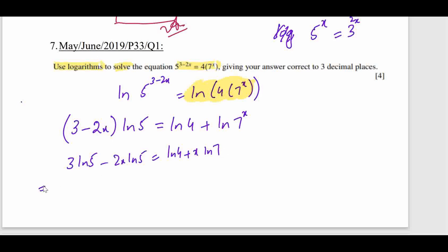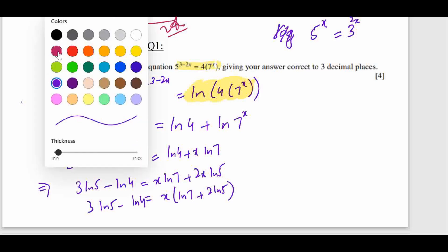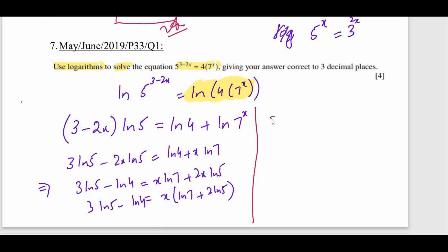We collect like terms: 3·ln 5 − ln 4 = x·ln 7 + 2x·ln 5. Taking x as common on the right: 3·ln 5 − ln 4 = x(ln 7 + 2·ln 5). Therefore x = (3·ln 5 − ln 4) / (ln 7 + 2·ln 5).